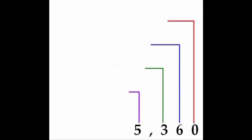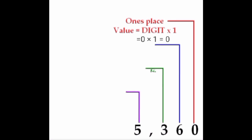Let's go to the next example. First, we have to draw a place value chart. To find the place value of 0 — 0 is in which place, dears? Yes, very good — ones place. We already know place value equals digit into place, so the place value of 0 is equal to 0 into 1, which is equal to 0. Therefore, the place value of 0 is 0.